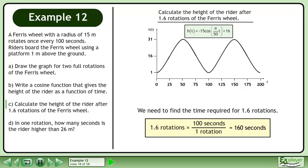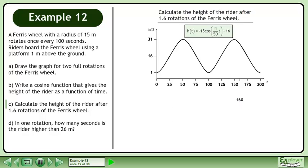Multiply 1.6 rotations by the conversion multiplier 100 seconds over 1 rotation. This gives us 160 seconds. When t equals 160 seconds, the height is found by evaluating H at 160.